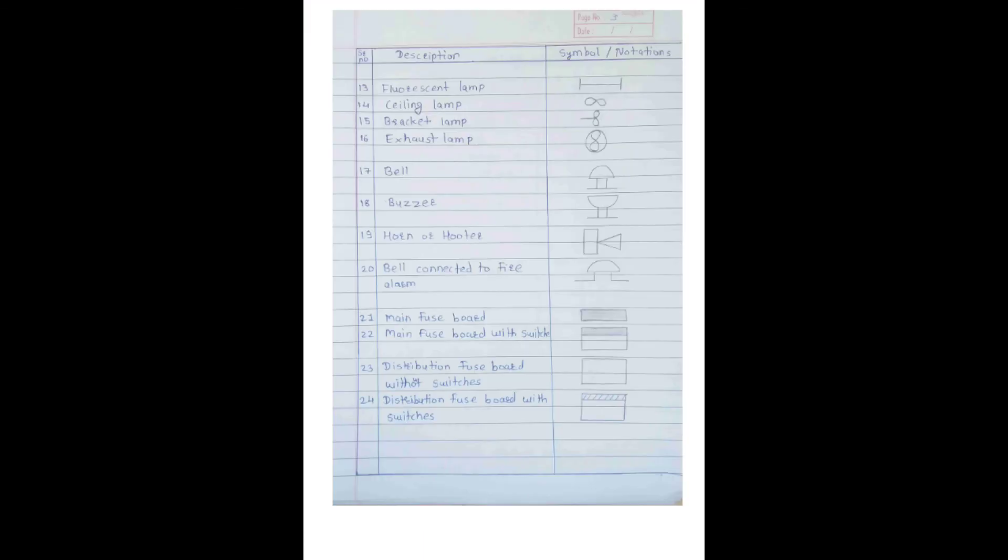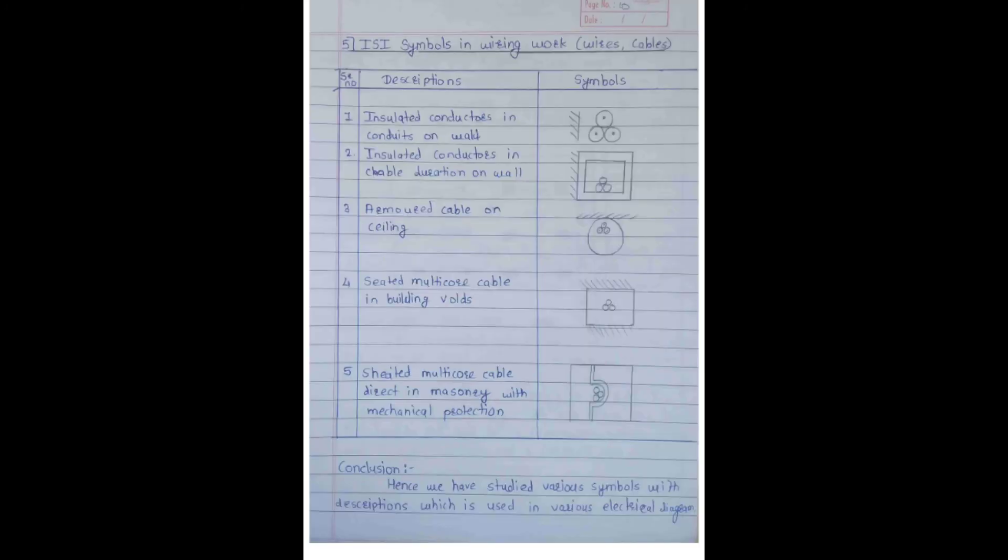These are also the symbols, ISI symbols for wiring work, wires and cables. Conclusion: hence we have studied various symbols with description which is used in various electrical diagrams.